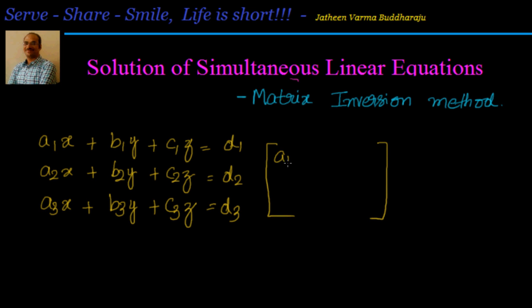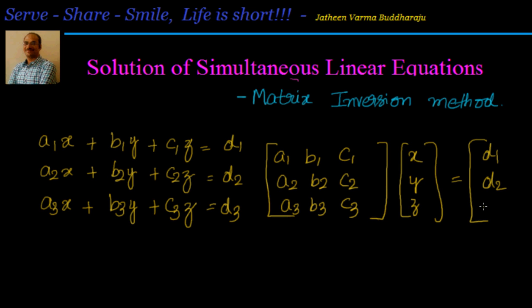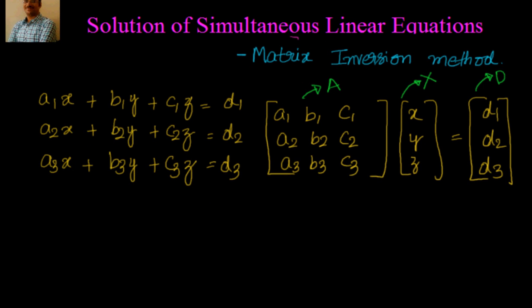That's nothing but you will get your coefficient matrix out: A1, B1, C1, A2, B2, C2, A3, B3, C3 into XYZ is nothing but equal to D1, D2, D3. Let us name these matrices now. We will say this is A, we will say this is X, capital X, and this we will say is equal to D. So we have three matrices now. I can write it in the format of A into X is equal to D.